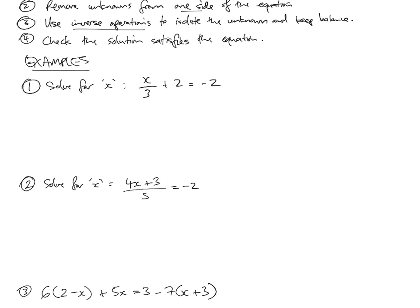That means I need to go in reverse BEDMAS order and get rid of all the stuff around x until you've got x is equal to something. BEDMAS is brackets, exponents, division, multiplication, addition, subtraction. We have to go in reverse BEDMAS order. The last letter is S — do we have any subtractions? No. So we go in reverse: A — we've got an addition, plus 2. We need to get rid of the plus 2 with an inverse operation. What's the inverse of adding 2? Taking 2. So we need to take 2 from both sides to keep balance.